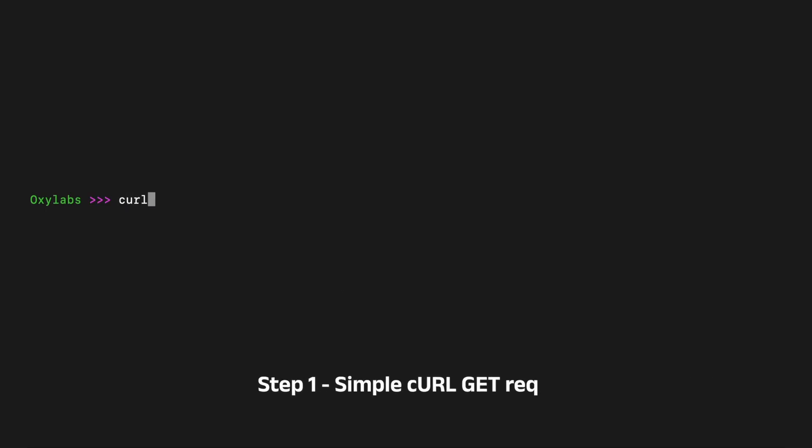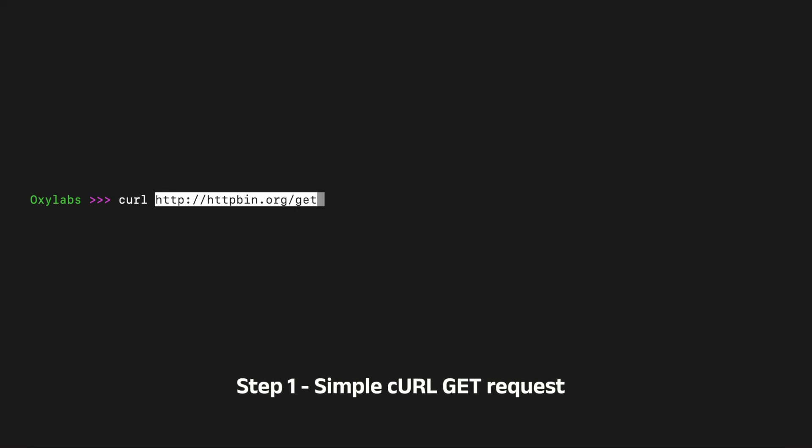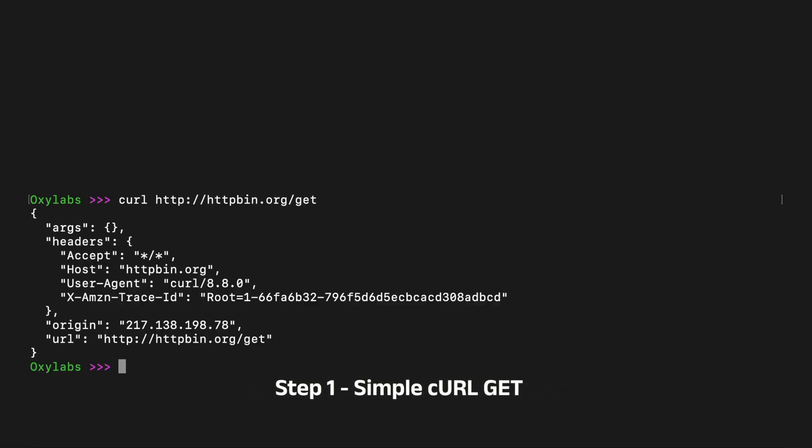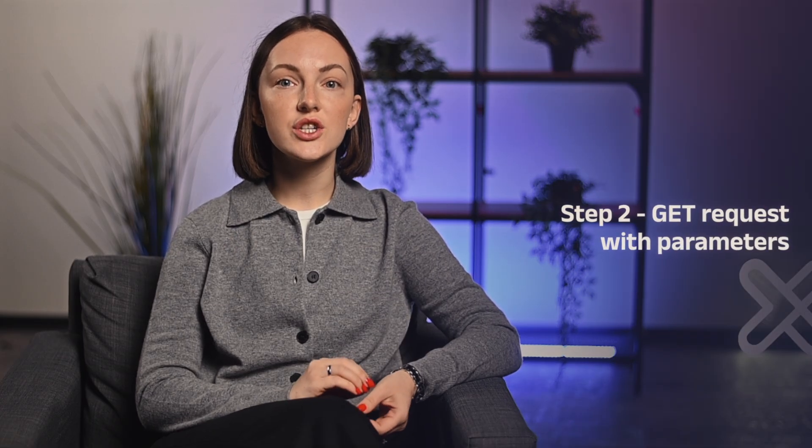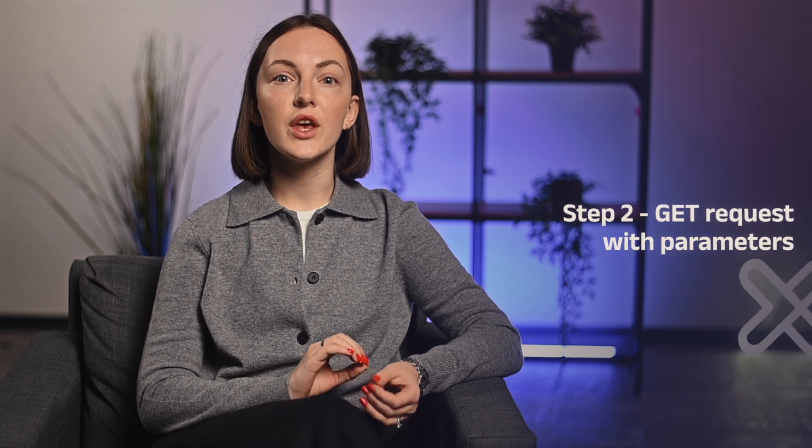If the default request method is GET, you can skip the request option and send a GET request as follows. A GET request with parameters allows you to send additional data to the server within the URL of your request. CURL provides two powerful options, -d and -G, to facilitate this. Note that if you use -d without -G, the request will be a POST request. Also, if you use the -X option with GET value, the data you want to send with -d will be ignored.